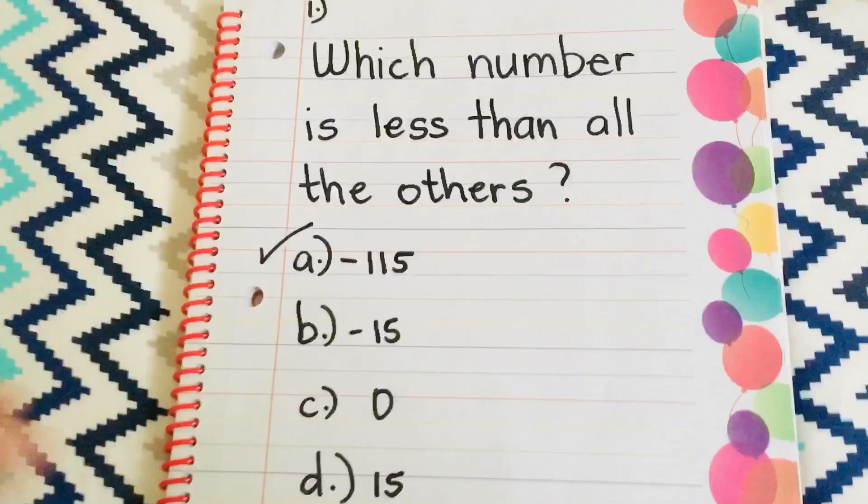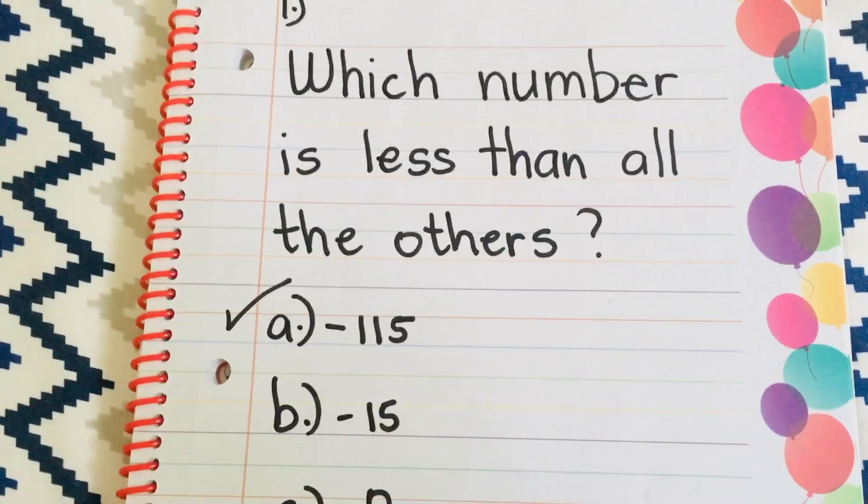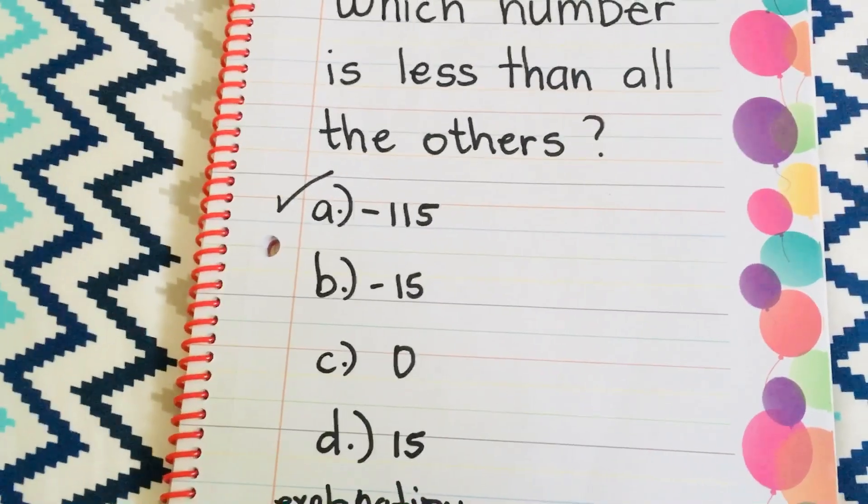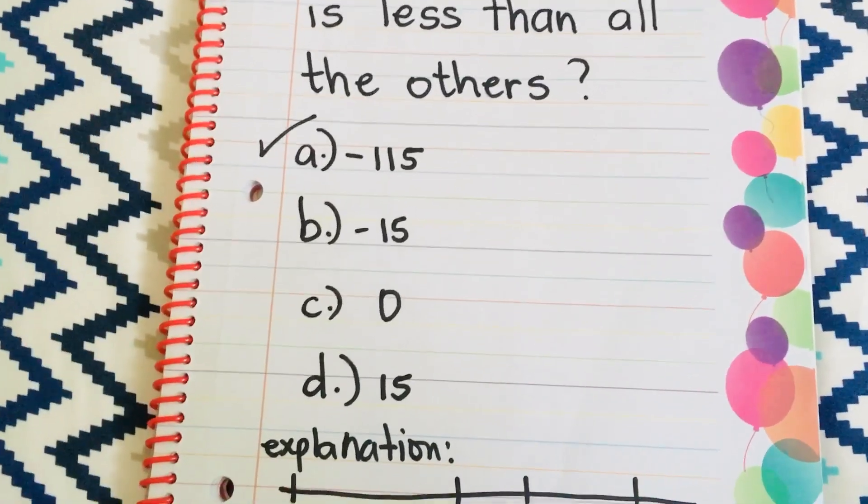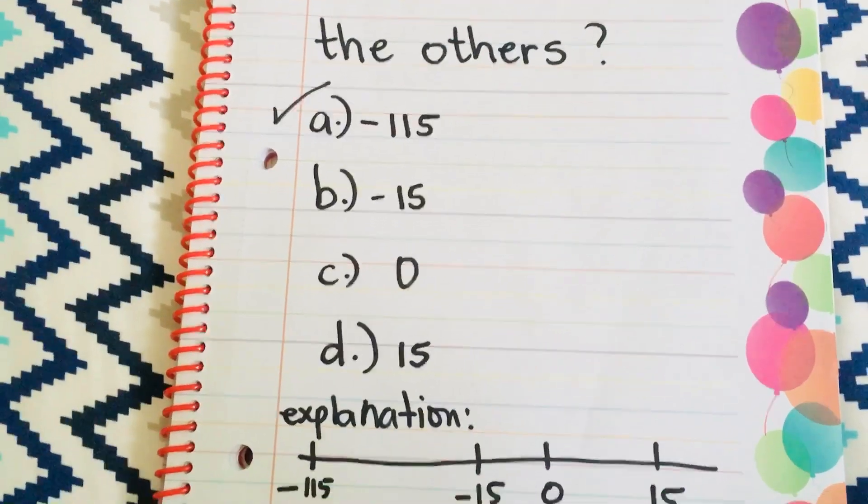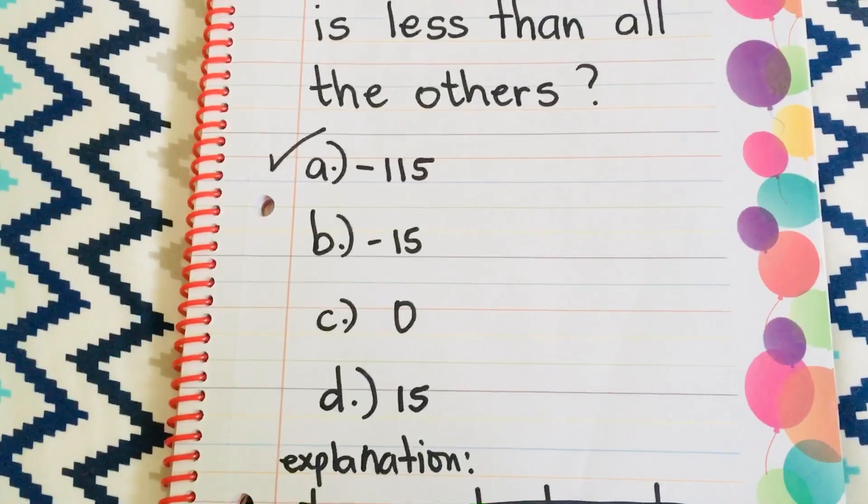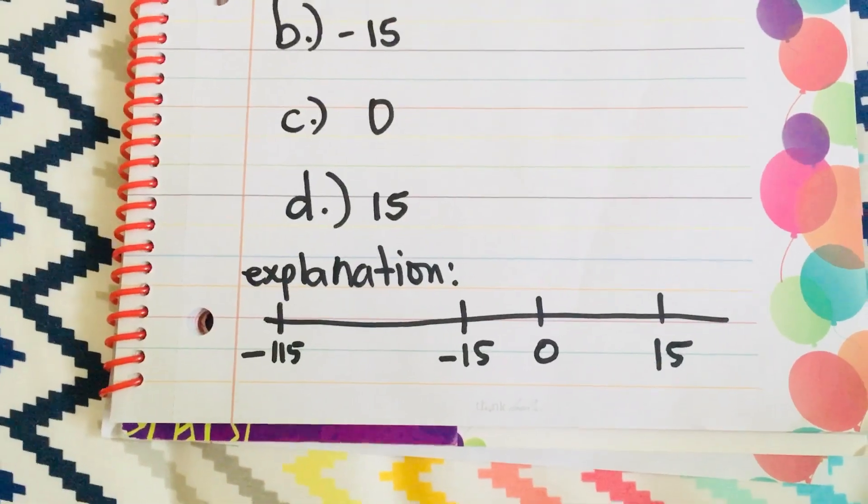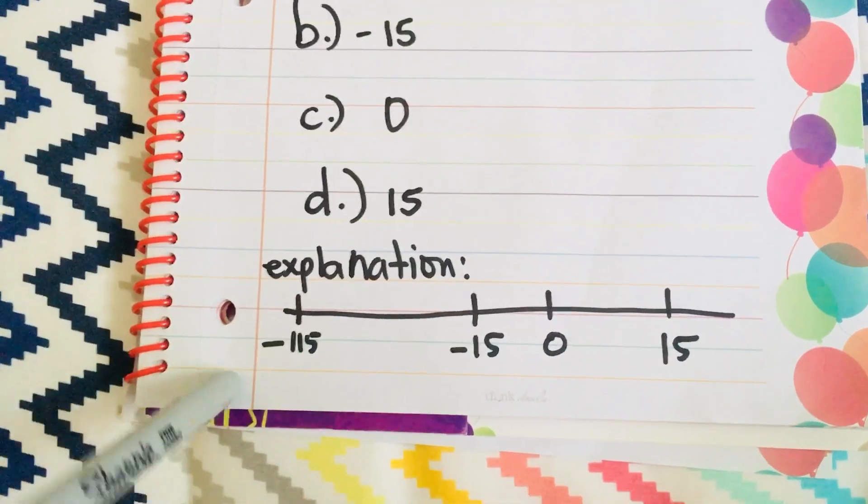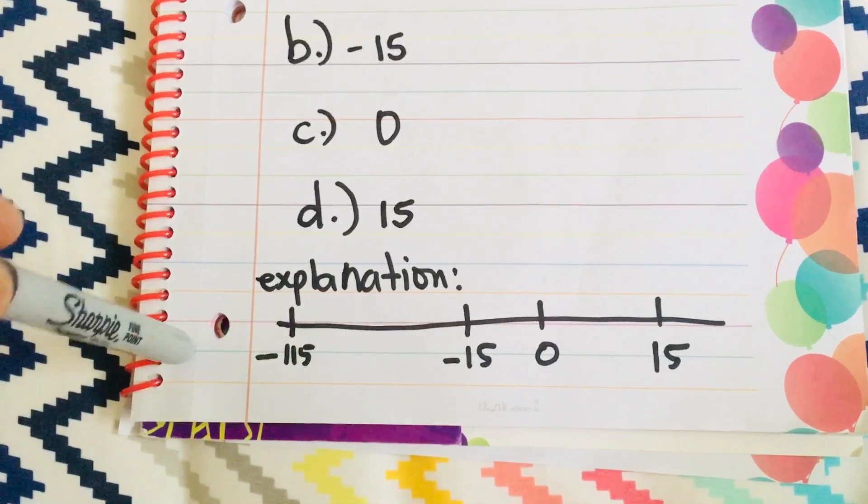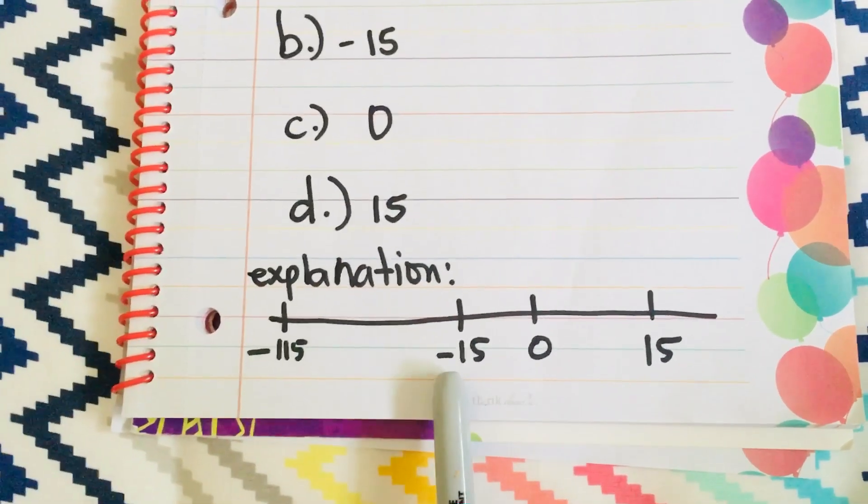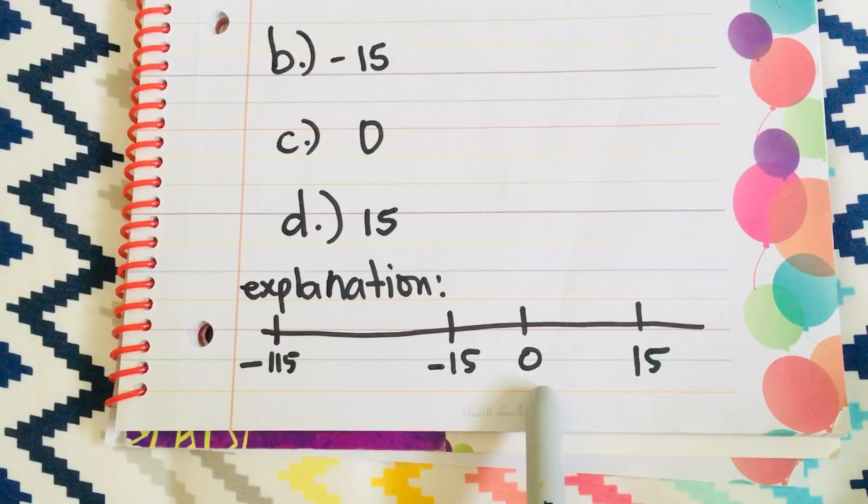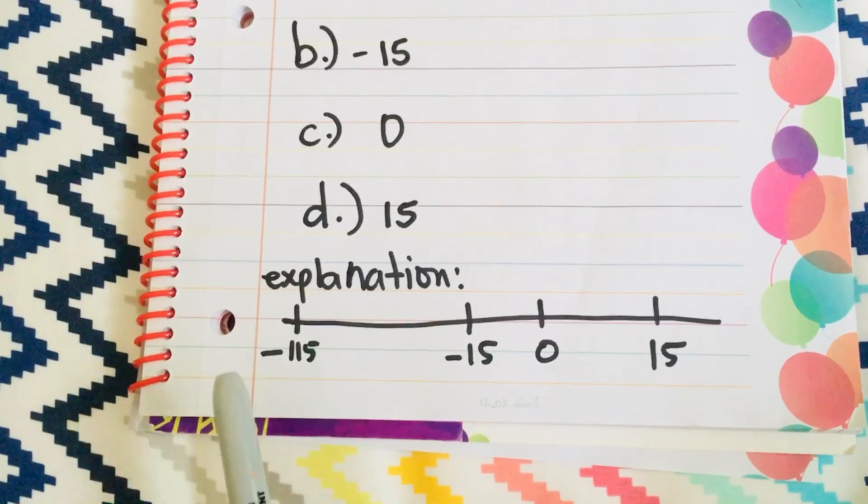So, I have here at least 15 questions. The first one, which number is less than all the others? Is it A, negative 115, or B, negative 15, C, 0, or D, 15? The answer would be negative 15 because when you look at the number line, 15 is way to the left and it has lesser value, and then negative 15 is closer to 0, which is the positive, and so the answer would be negative 15.